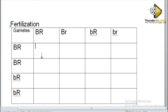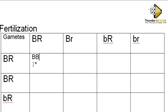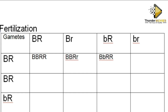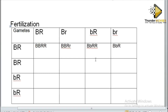Capital B, capital B, capital R, small r — yes. Then capital B, small B, capital R, capital R. And then capital B, small B, capital R, small r. Continue filling in the Punnett square: small B, capital B, capital R, capital R, and small B, capital B, capital R, small r.